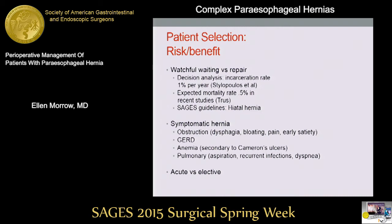Now, if your patient has symptoms — and those could be anything from obstructive to reflux, to anemia, to pulmonary symptoms such as recurrent infections or shortness of breath — then you're going to recommend a repair most likely. And then in the acute setting, of course, you have a different risk-benefit analysis, and most of those patients are going to go on to repair for acute incarceration or obstruction.